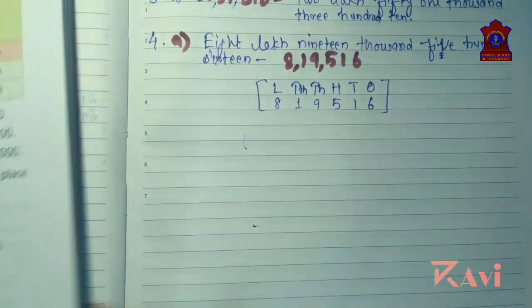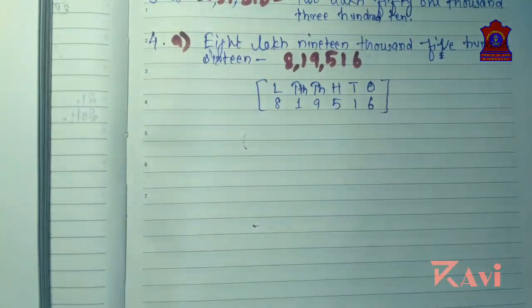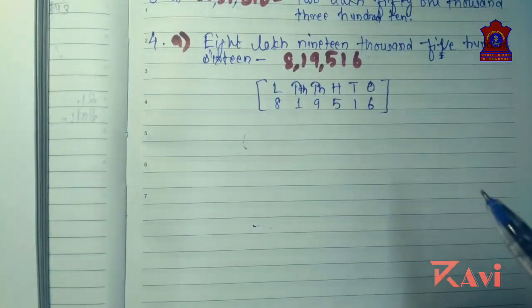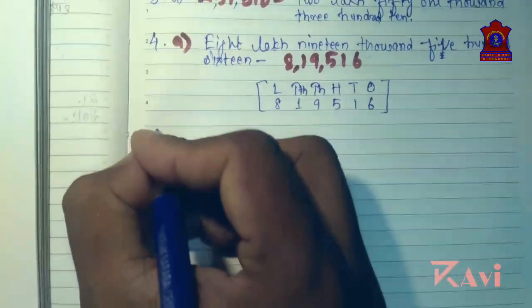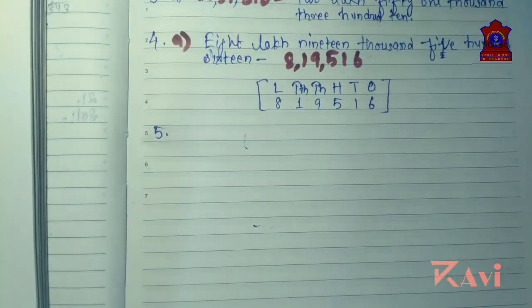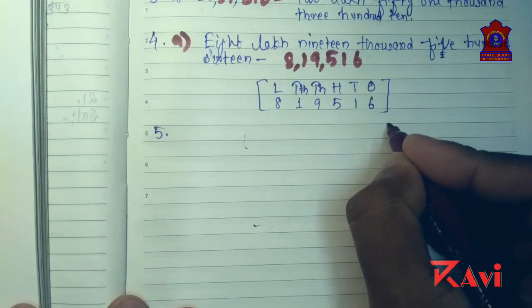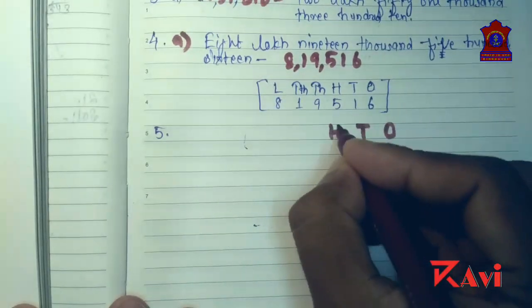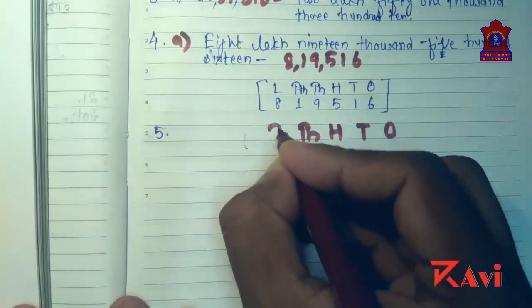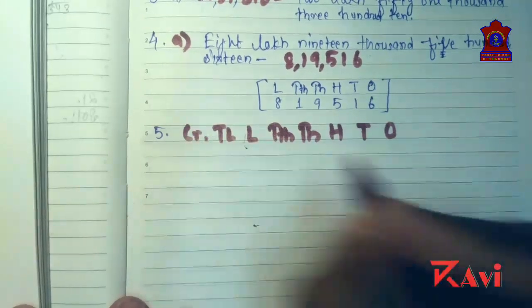If you have understood question number a, you can do b, c, and d by yourself. These questions we will be doing in the online class also, so don't worry. Now question number five: build the numbers. First write the place values — ones, tens, hundreds, thousands, ten thousands, lakh, ten lakh, crore.